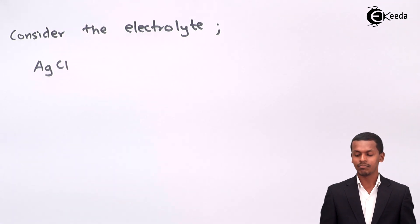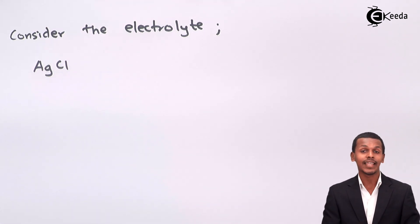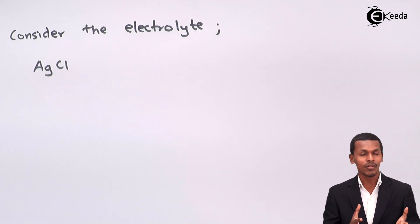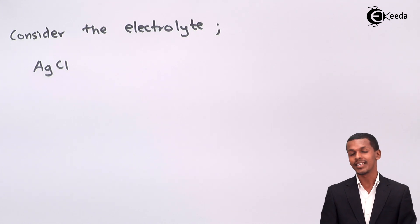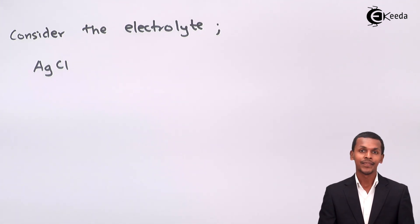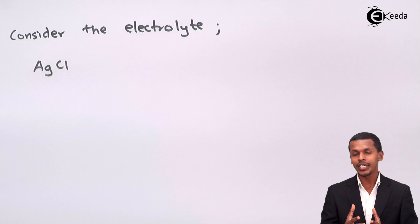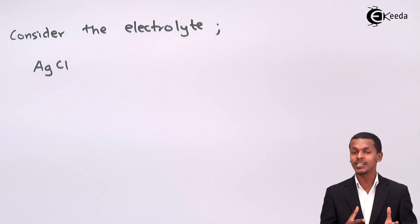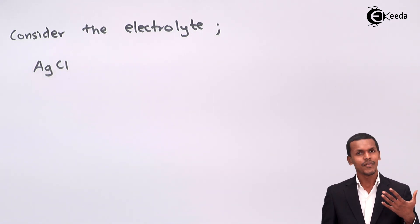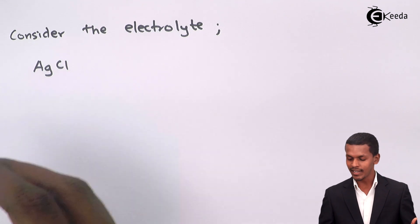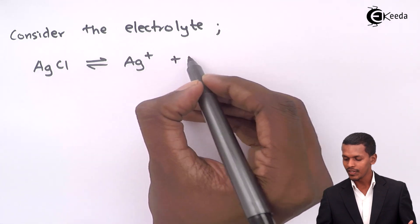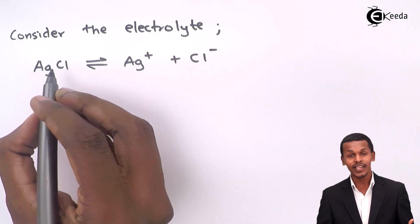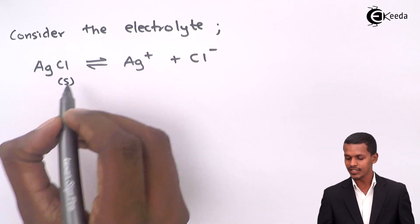I have considered the electrolyte AgCl. As you know, AgCl is a salt or electrolyte that is not very much soluble in water. So it will dissociate completely into Ag⁺ as well as Cl⁻. Therefore, the equilibrium is maintained and only a small fraction of Ag⁺ and Cl⁻ is obtained, where AgCl is basically in the solid phase.